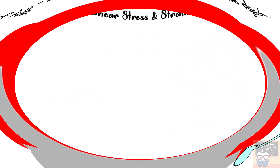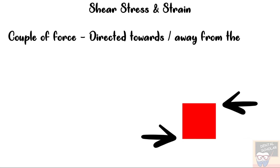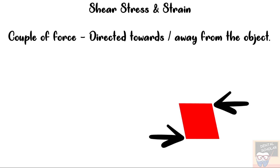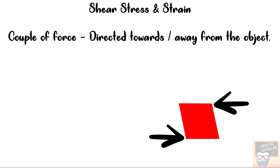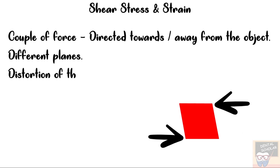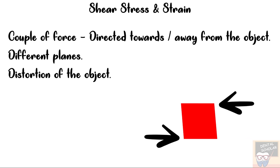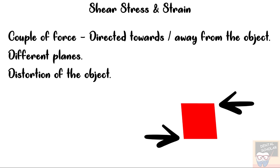Next is shear stress and strain. Here the couple of forces may be directed either towards or away from the object, but as you can see in the animation, the forces act in different planes, resulting in distortion of the object. Such forces are encountered in the oral cavity during the chewing cycle.